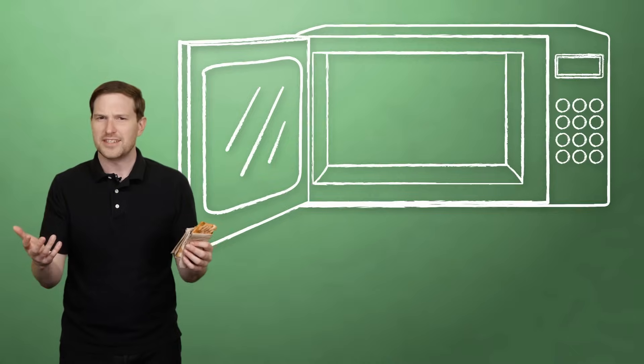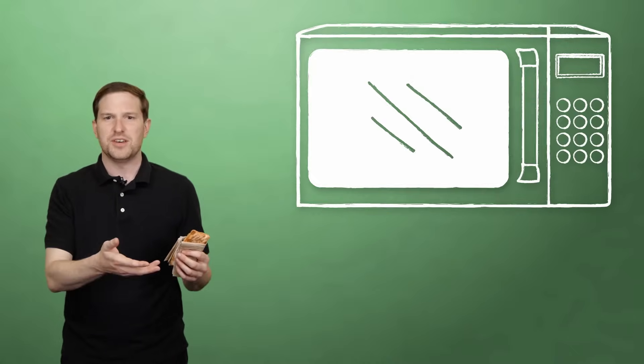Metal, however, does reflect microwaves, which is why it's a bad idea to leave a spoon in your cheese dip when the microwave oven's on. Not that any of us have done that.